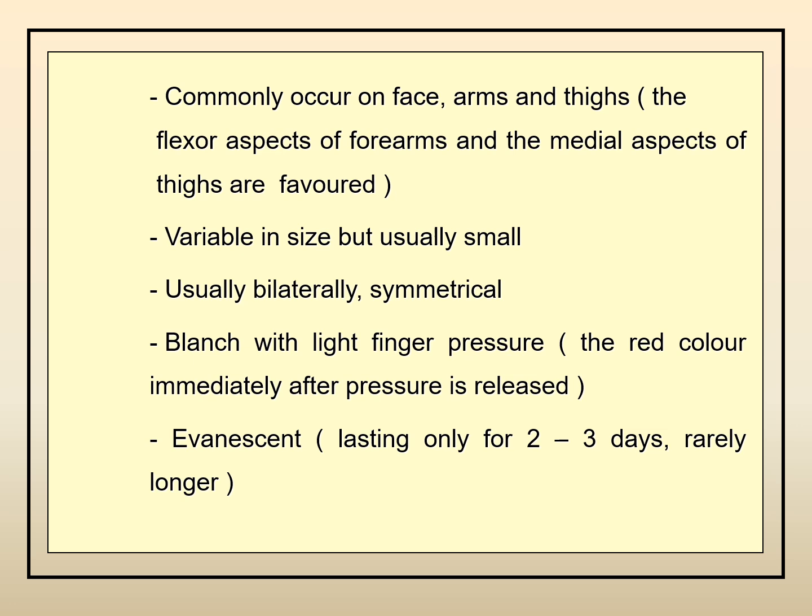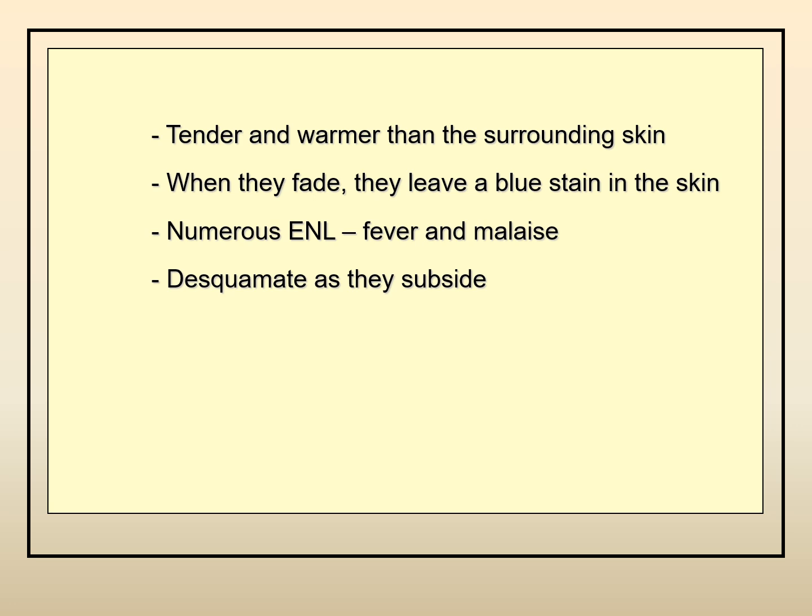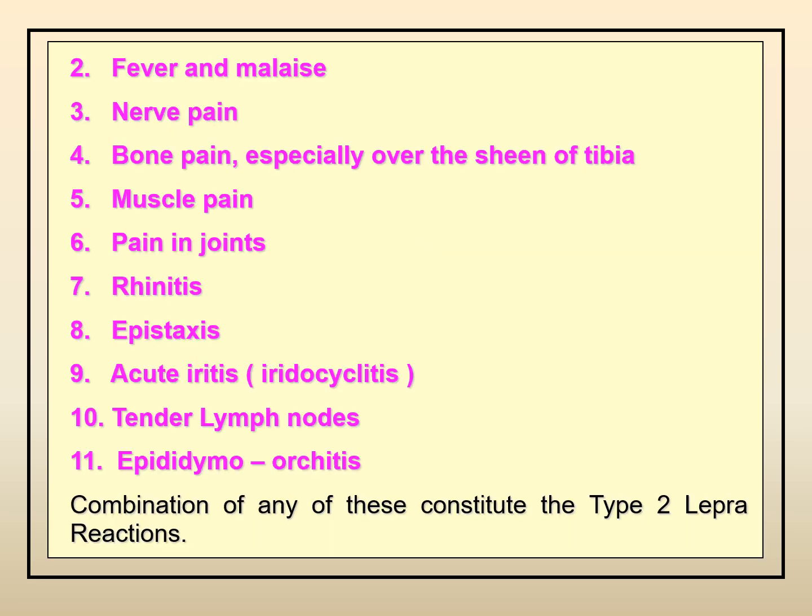Other symptoms seen with ENL include fever and malaise, nerve pain, bone pain, muscle pain, joint pain, rhinitis, epistaxis, acute arthritis, iridocyclitis, tender lymph nodes, and epididymo-orchitis. Type 2 lepra reaction can occur as a combination of nodules with any of these other symptoms or signs. Photographs show ENL on the face and multiple nodules on the chest and forearm, sometimes as pustular nodules or pink-colored multiple nodules.